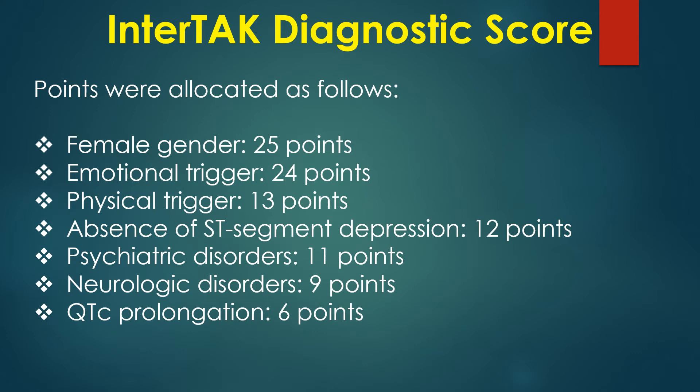Points allocated in the InterTAK diagnostic score are as follows: Female gender — 25 points; Emotional trigger — 24 points; Physical trigger — 13 points; Absence of ST segment depression — 12 points; Psychiatric disorders — 11 points; Neurologic disorders — 9 points; QTc prolongation — 6 points.